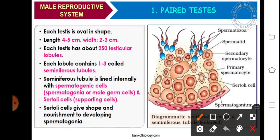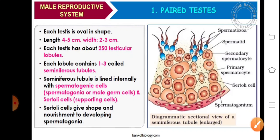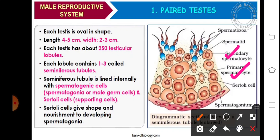Seminiferous tubules are lined with two types of cells: the spermatogenic cells and the supporting cells. The Sertoli cells, or supporting cells, give shape and nourishment to the developing spermatogonia. Here is the diagrammatic sectional view of the seminiferous tubule. We can see the formation of primary spermatocyte, then secondary spermatocyte, then spermatid and spermatozoa. That is what is referred to as the process of spermatogenesis — the process of formation of the mature sperm.